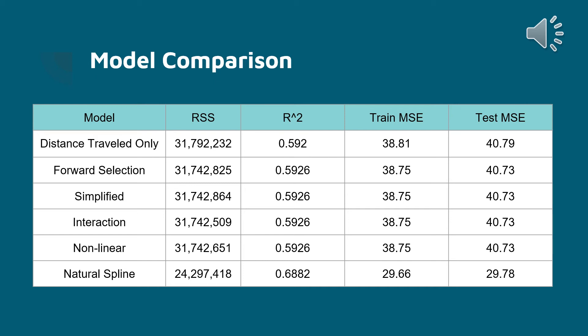For our natural spline model, however, we had a nice change — an R-squared of almost 0.7, which indicates a fairly good fit to the data. We saw that the mean squared error was very close between the train and test sets, meaning this model seems to fit the data very well and gives us a nice prediction of our fare amount.